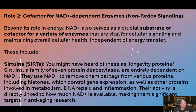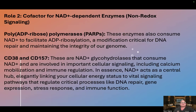These include sirtuins. You might have heard of these as longevity proteins. Sirtuins are a family of seven protein deacetylases and are entirely dependent on NAD. They use NAD to remove chemical tags from various proteins including histones, which control gene expression, as well as other proteins involved in metabolism, DNA repair, and inflammation. Their activity is directly linked to how much NAD is available, making them significant targets in anti-aging research.